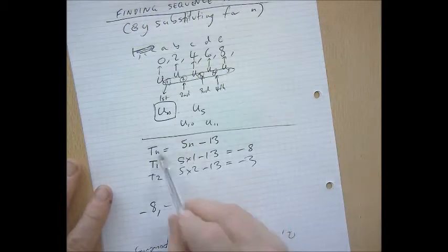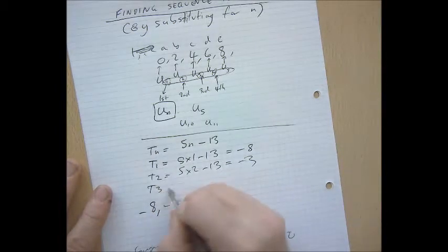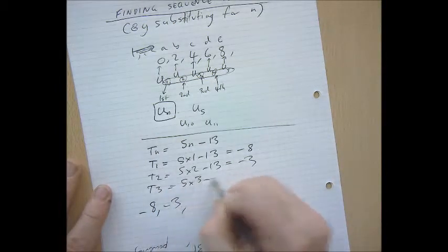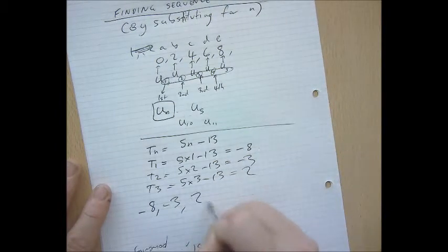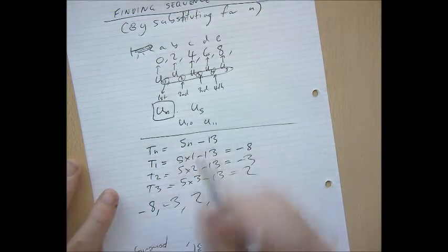Put a 3 where n is. So, that means t3 equals 5 times 3 minus 13, which is a 2. So, put a 2 in the third position. Because, remember what I said about a minute ago?